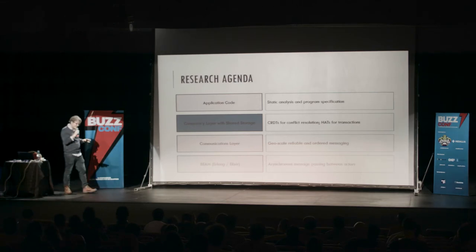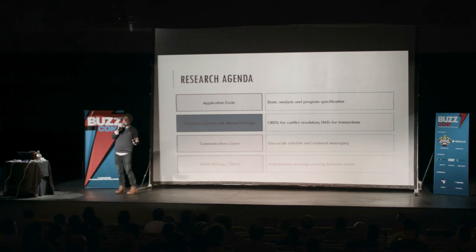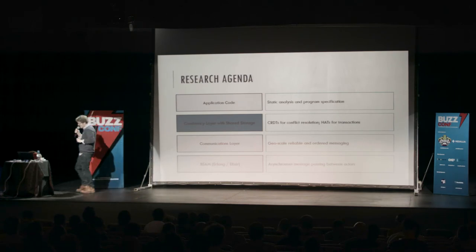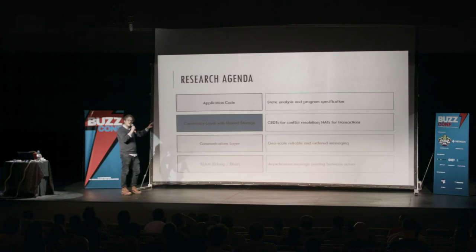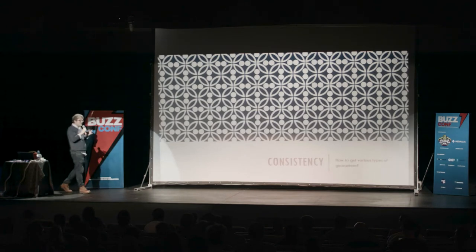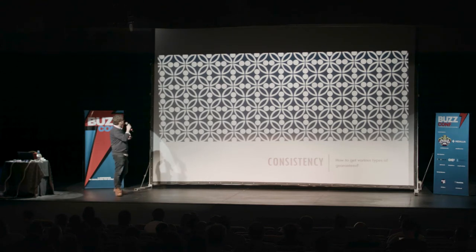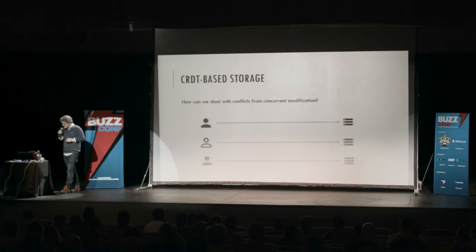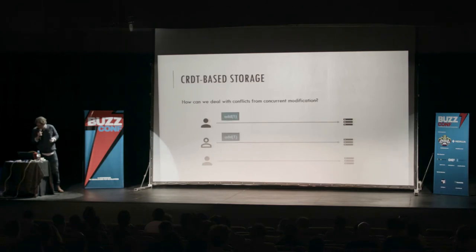That wraps up our work on the communications layer. Partisan is an open source library with some adoption in the open source community and a couple of commercial users. The new features will hopefully be in the next release in the next month or so. Briefly: the consistency layer. When we have causal order without total ordering or serializable transactions, we'll run into conflicting updates. To mitigate this, we build on top of CRDTs — abstract data types with merge functions where conflicting updates always merge to a value.